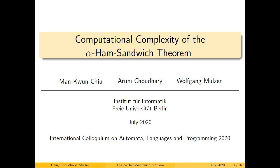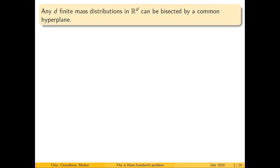Let us first recall what the classical ham sandwich theorem tells us. In d-dimensional Euclidean space, given d finite masses, the theorem says that there is a hyperplane that bisects all of these masses simultaneously. As a simple example, we have two masses in the plane and the line shown divides the areas in half.